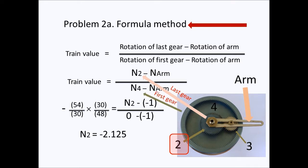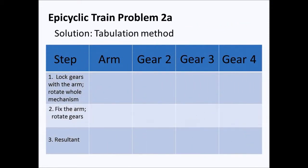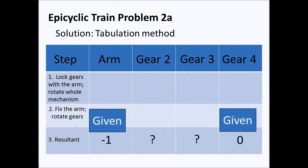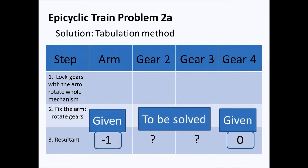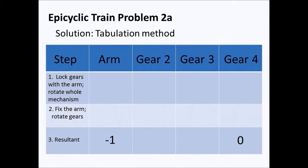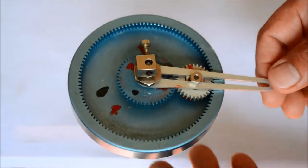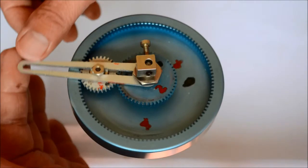We can now proceed to the solution involving the tabulation method, where we will have three steps. We have the given values: for gear four, zero, and for the arm, negative one. We have to find the number of revolutions of gear two and gear three. For the first step we fill up the boxes with negative one, as if we are rotating the whole mechanism once in the negative direction.